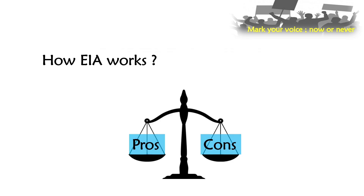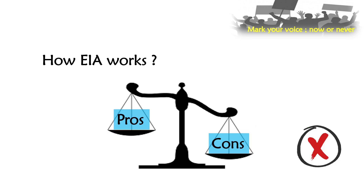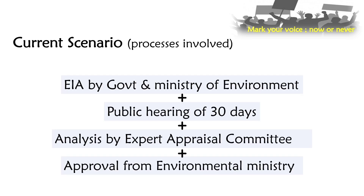Next, let's look at how EIA works. EIA thoroughly assesses the project scientifically and notes the pros and cons. If the pros weigh more, EIA will approve the project and advise how to mitigate the negatives. If the cons are heavier, EIA will either reject the project or suggest methods for betterment. The Environmental Protection Act and EIA under it are not against development — the point to note is that they promote sustainable development.